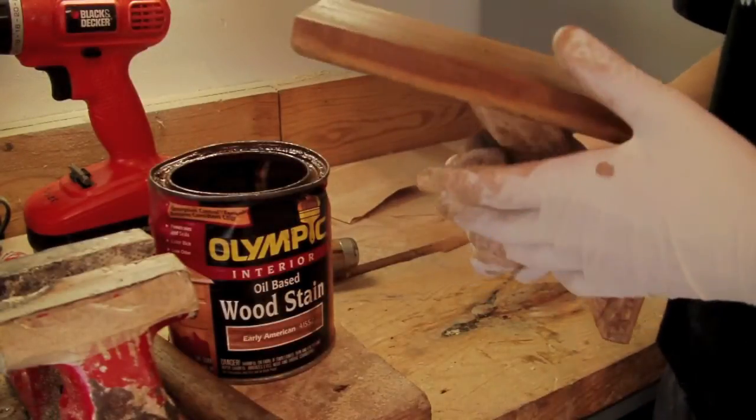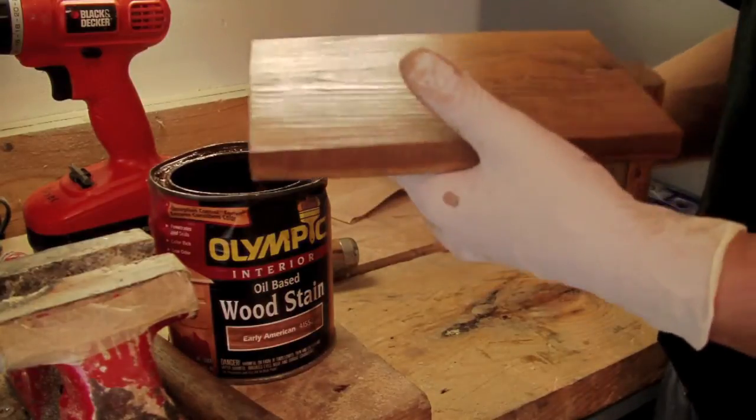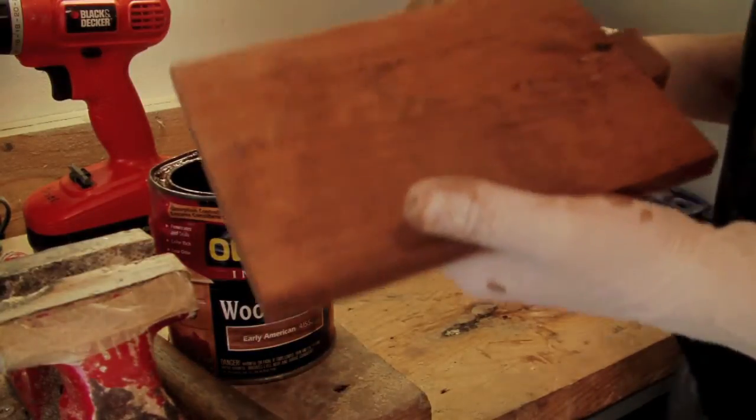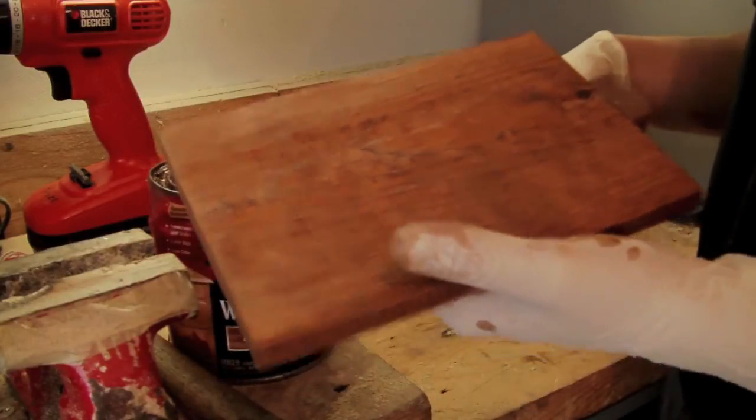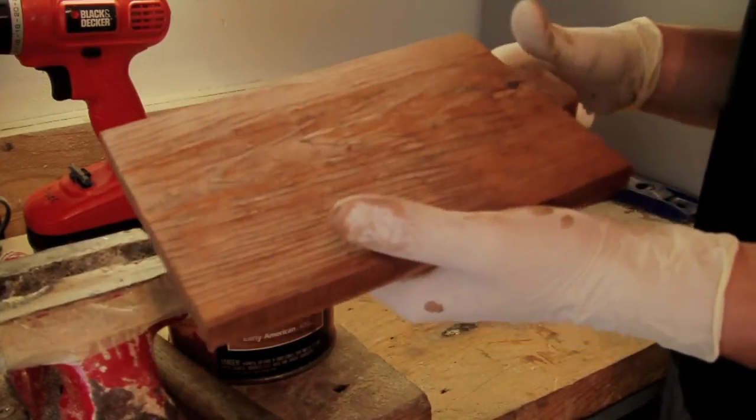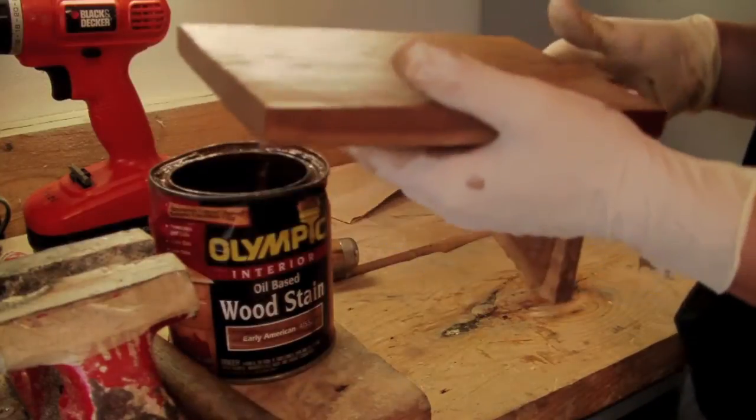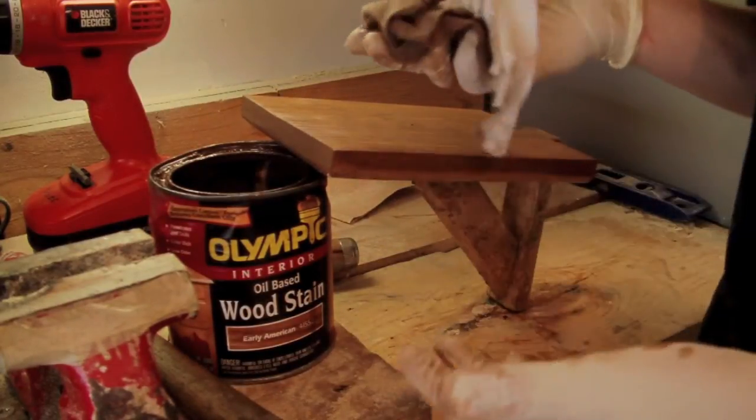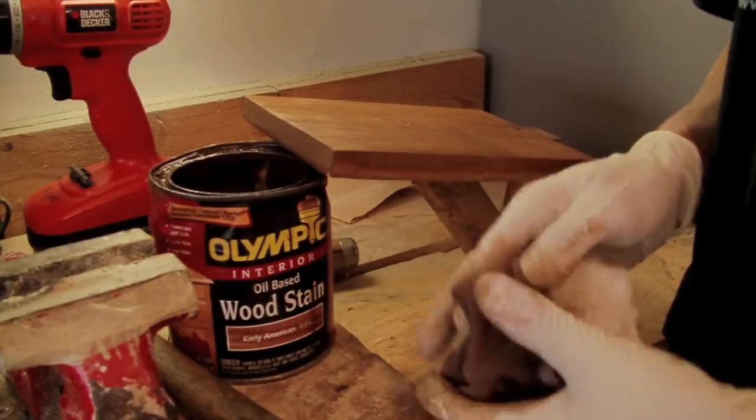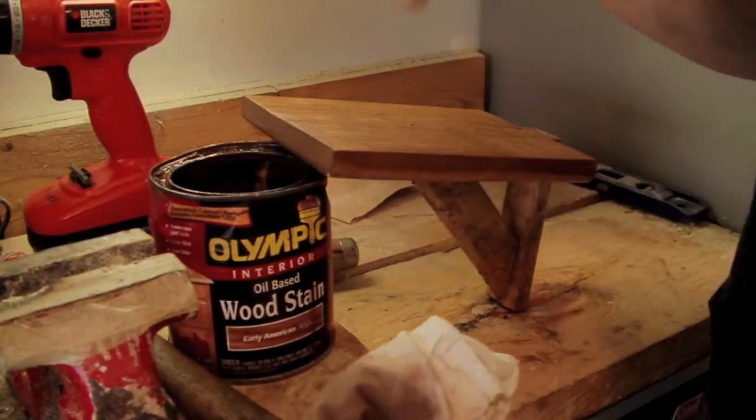Once you get all the stain applied, let it sit for a little while until the stain dries. And you can either put another coat of stain on, or you can put polyurethane on it. In this case, I'm going to put polyurethane on it. This isn't quite dry, so I'm going to let it sit. I don't think I'm going to show the polyurethaning, because it's pretty straightforward. It's the same process, except you just use a brush, and it's just like painting. But that you also let sit too.